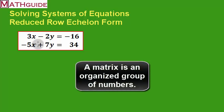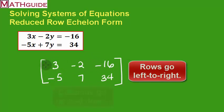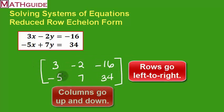The numbers I'm going to take are 3, negative 2, negative 16, negative 5, 7, and 34, and I'm going to form a matrix. I'm going to put these in an organized list with rows and columns. Remember, columns go up and down. Columns hold up buildings.